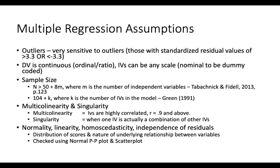In multiple linear regression, we have the assumption of multicollinearity, because we have more than one independent variable, as well as singularity. Multicollinearity is when the IVs are highly correlated — an R-score of 0.9 and above — meaning they are essentially the same variable. Singularity is when one IV is actually a combination of other IVs, so we need to check for that as well.